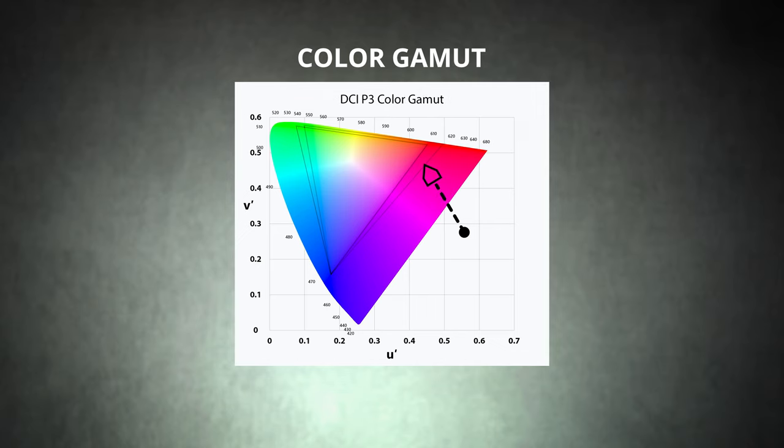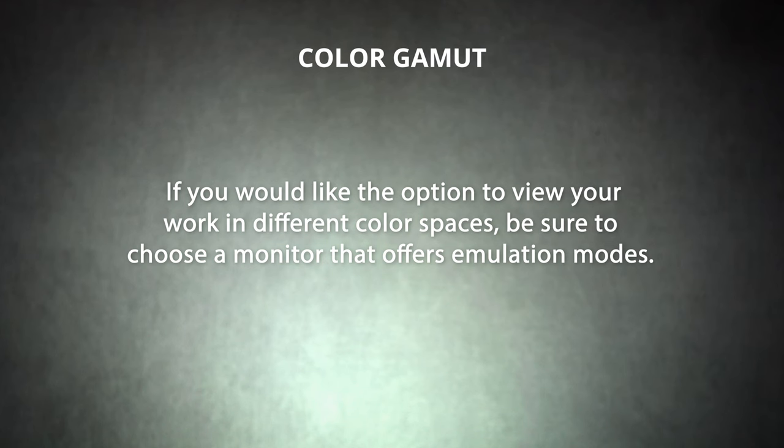Before making a selection, think about how you'll use your monitor. Consider both the color space needed to properly view the media you'll be editing, as well as the color space you'll use for final export and delivery. In some cases, you may not need the wider color spaces that Adobe RGB and DCI-P3 offer — for instance, if you only want to produce videos for YouTube and other social media platforms, you could choose a monitor that accurately reproduces the sRGB color space. However, if you can afford a monitor with a wider color gamut, you'll be prepared to work on a broader range of projects, including cinematic work. If you'd like the option to view your work in different color spaces, be sure to choose a monitor that offers emulation modes.